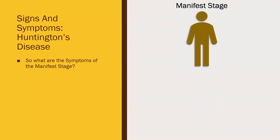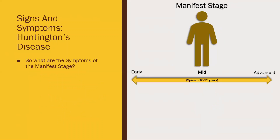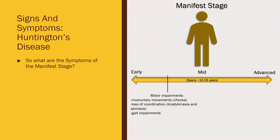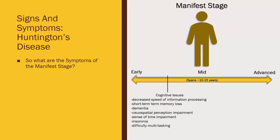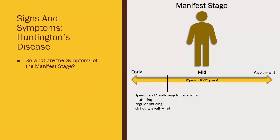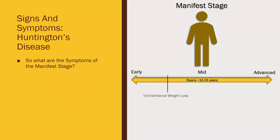Once HD has moved into the manifest stage, it is further divided into five stages ranging from early to advanced. During the early to mid stages, individuals may experience motor impairments such as involuntary movements, loss of coordination and gait impairments, cognitive issues such as decreased speed of information processing, speech and swallowing impairments such as stuttering, emotional disorders such as depression, cardiovascular impairments, and unintentional weight loss. The mid to late stages almost always consist of the escalation of all previously stated issues, with the addition of bowel and bladder impairment.